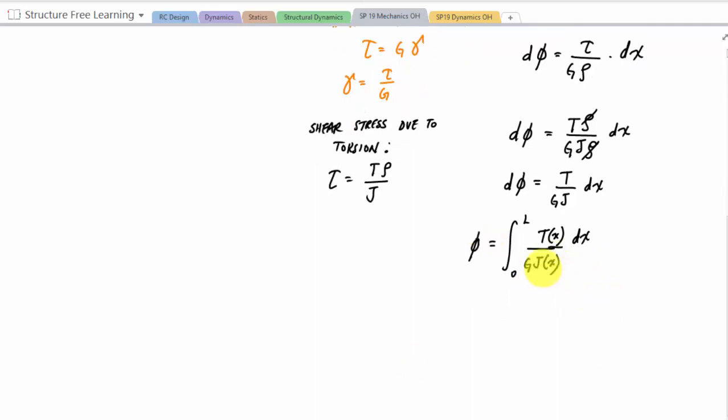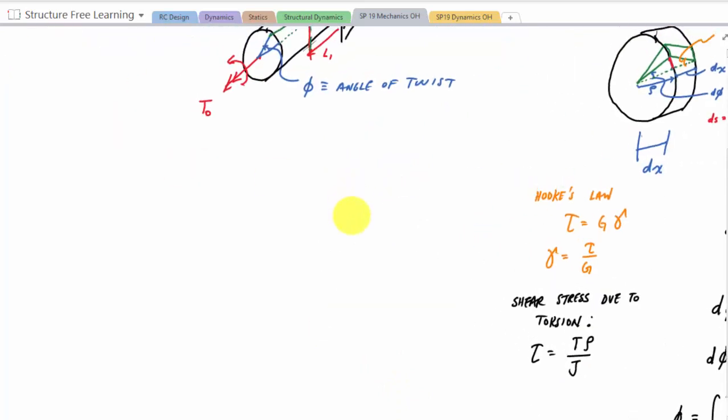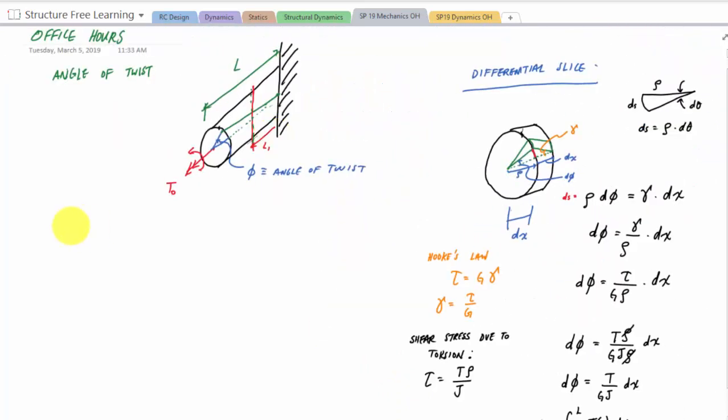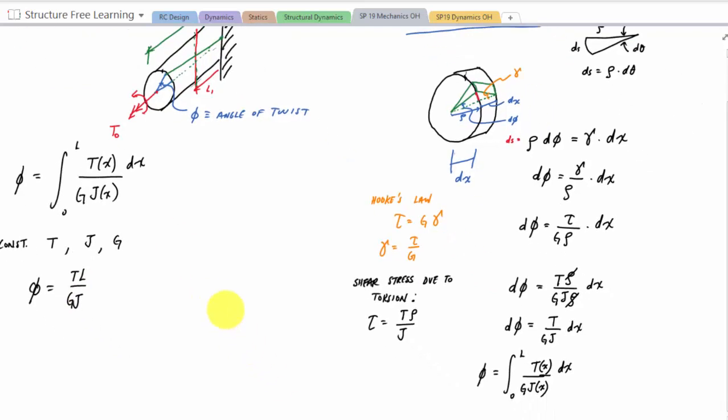But if I have a constant internal torque and my j's constant, so in the case where I have a constant internal torque and a constant j, and assuming the same material, so g, then this thing just reduces to the integral of dx, so that's why we could use tL over gj. And we're summing the, you know, we're gonna have discontinuities and things just like we've done before, and we're gonna sum those parts up to get the angle of twist. And that's it, that's the angle of twist in a nutshell.